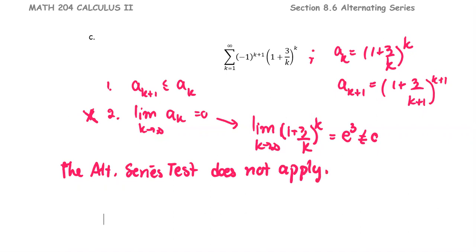If the alternating series test doesn't apply, it doesn't mean the series diverges. We are still going to use another test to verify it. The next option for us is to use the divergent test.